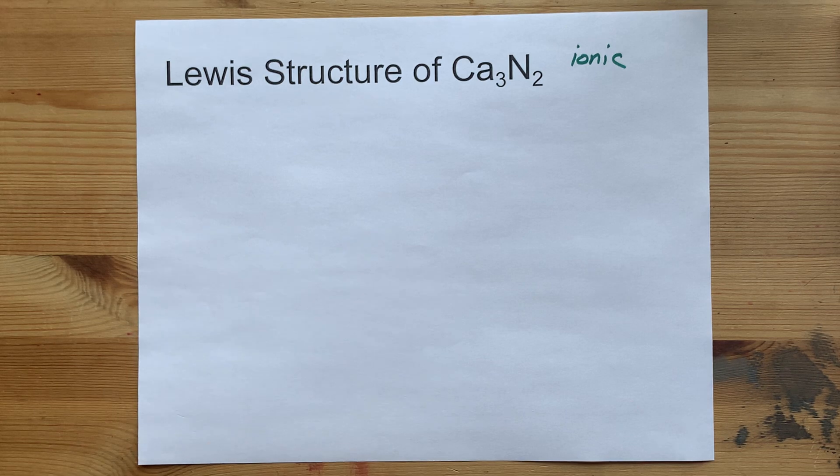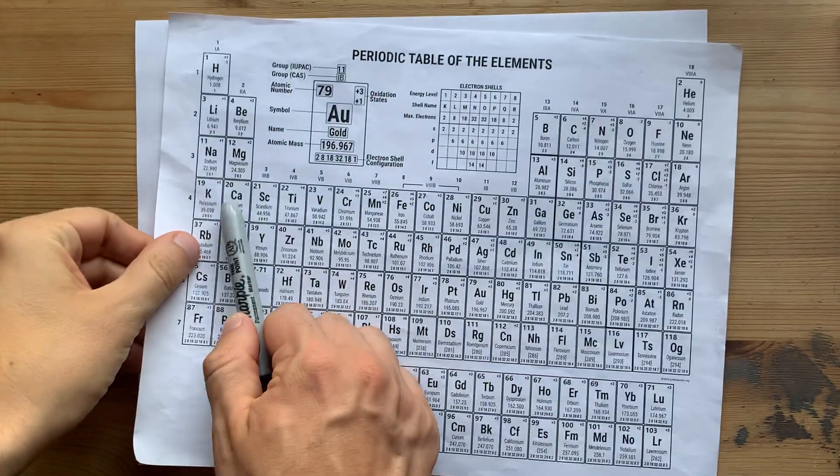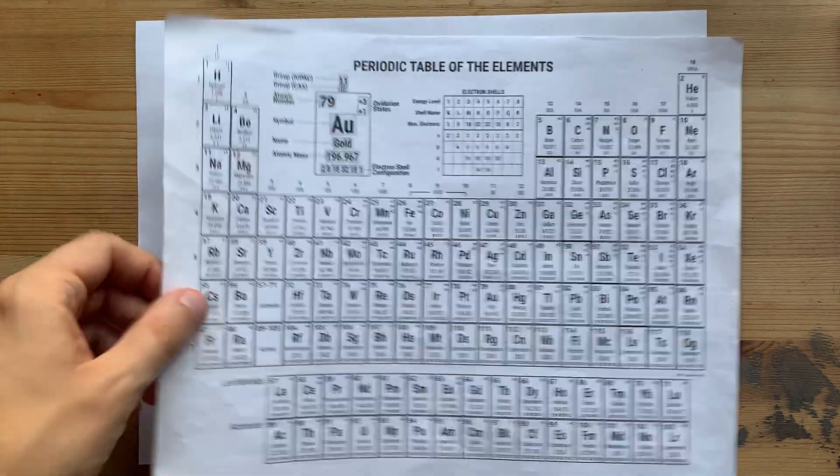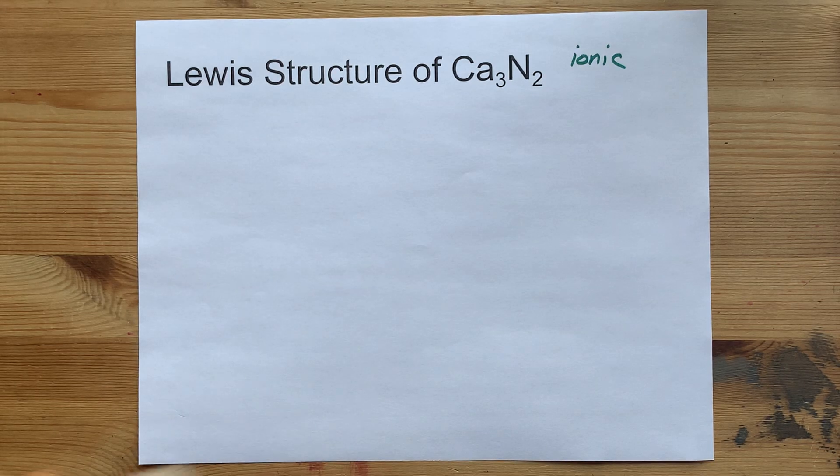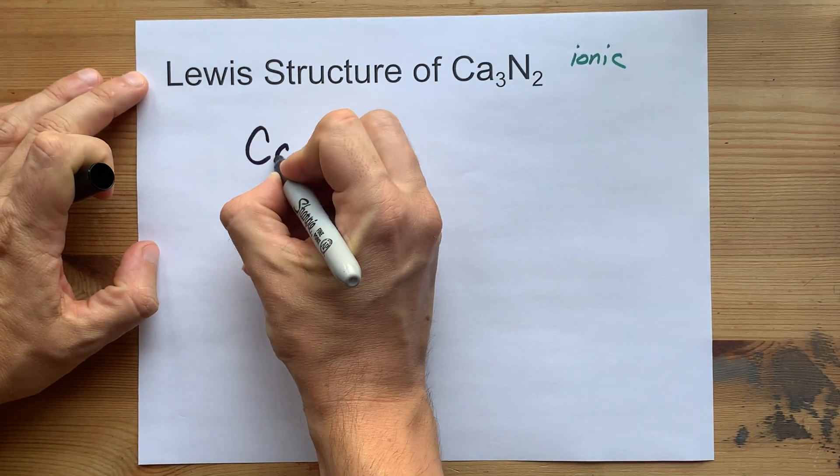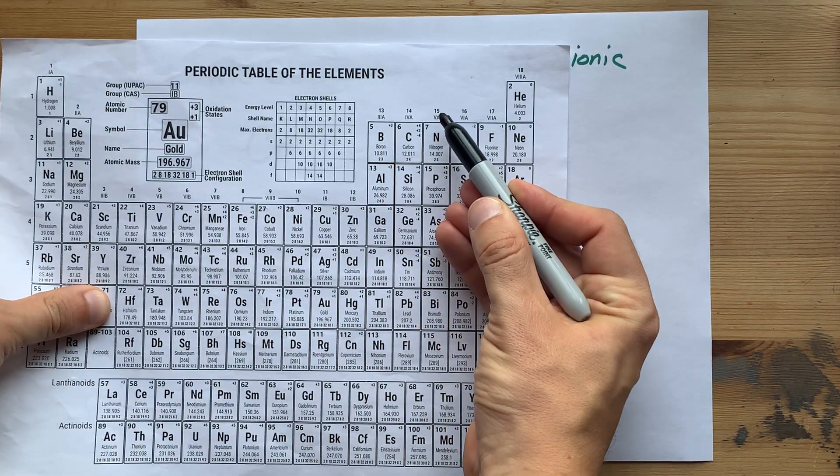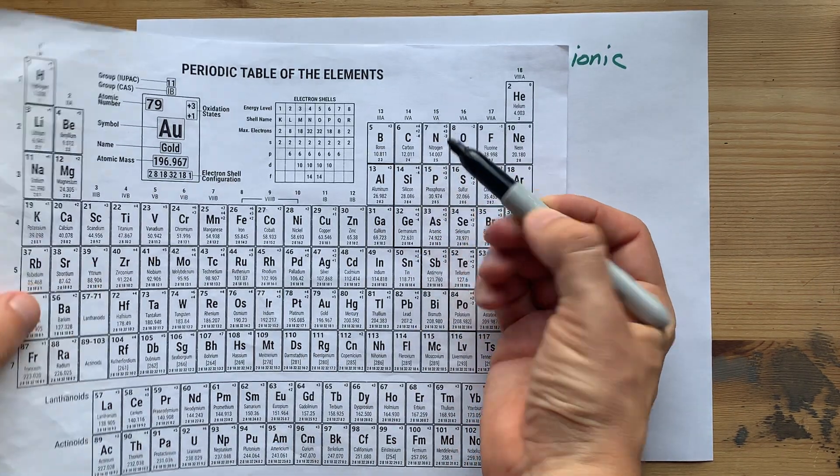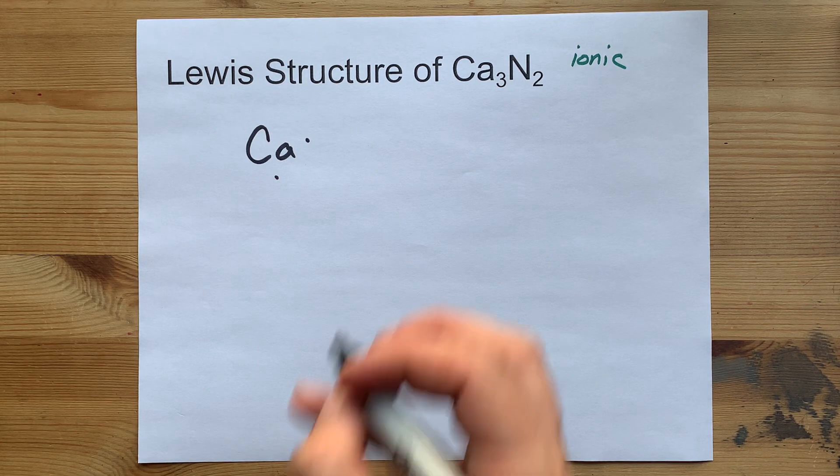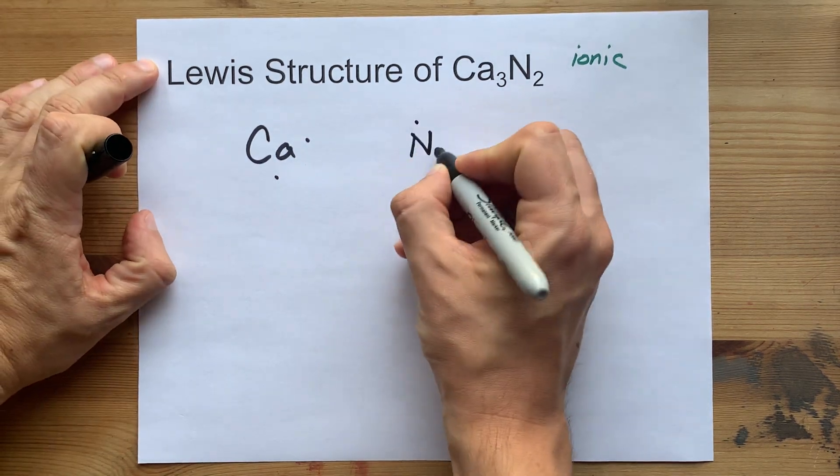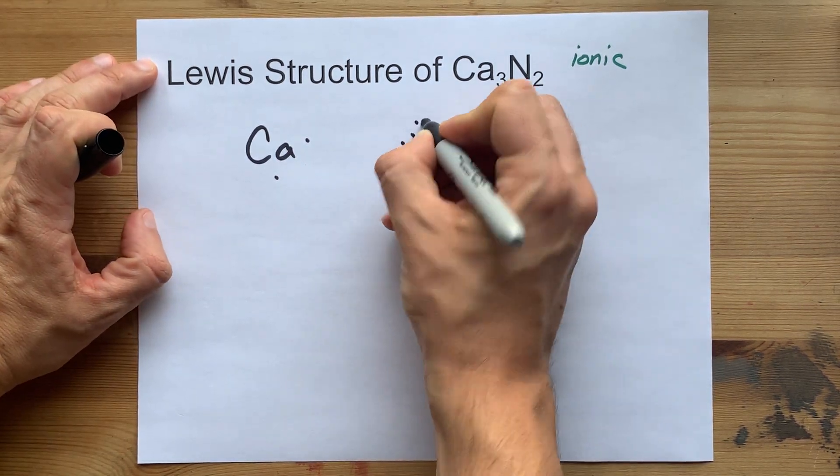This is going to take some work, but bear with me. Calcium is in the second column, so it brings two valence electrons with it. Ca 1, 2. Nitrogen is in group 15, so it brings five valence electrons with it. That's nitrogen 1, 2, 3, 4, 5.